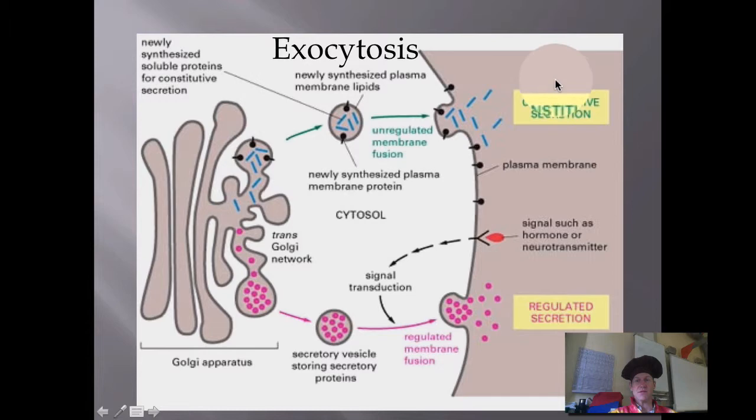One is constitutive secretion, which is unregulated. So as these vesicles are produced, the protein is released. The second type is regulated. This one requires some kind of a signal. It could be a hormone or a neurotransmitter that bonds with this, could be a glycoprotein on the cell membrane. That signal will then cause the release of this protein, which was in a storage mode. That's exocytosis. Things are being exited from the cell.